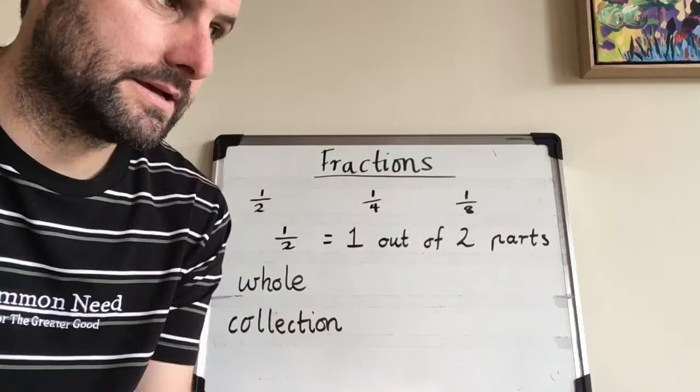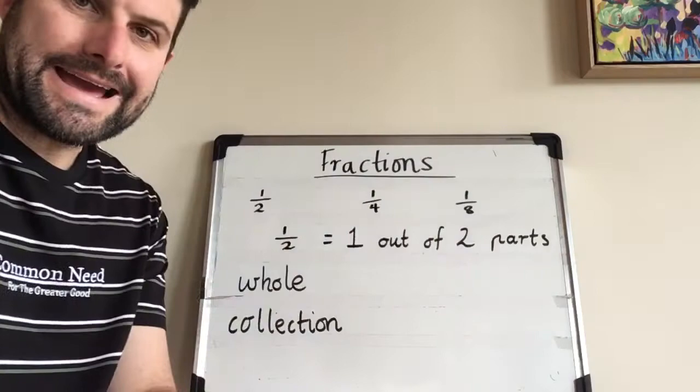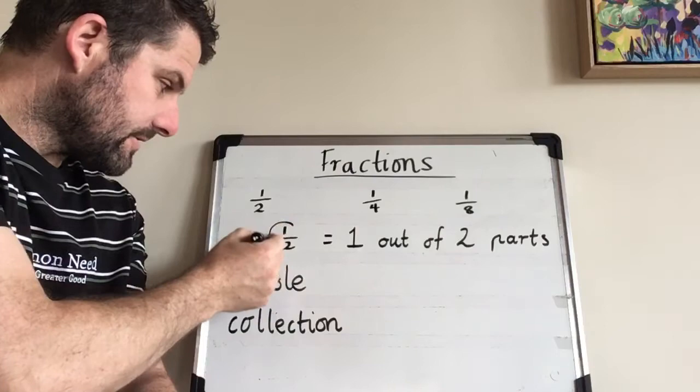So we're going to have a look at a couple of different types of fractions as we go through in the next couple of weeks. An example of how some are written is one half, one quarter and one eighth. So let's have a look at one half to start with. So this is one half written here.